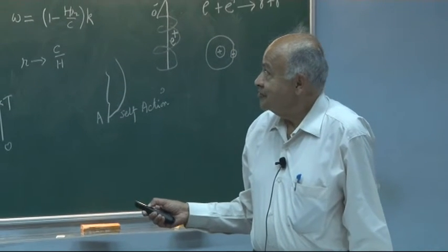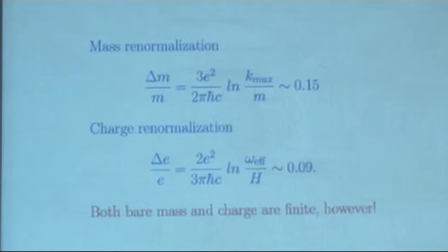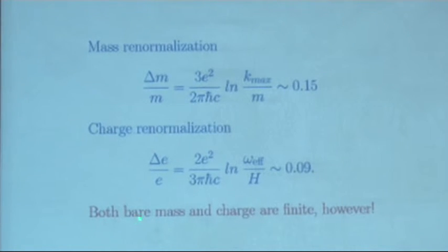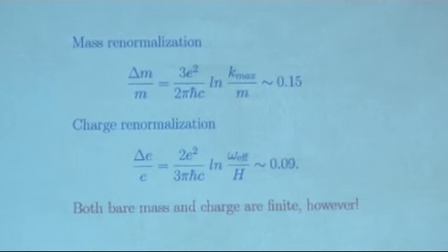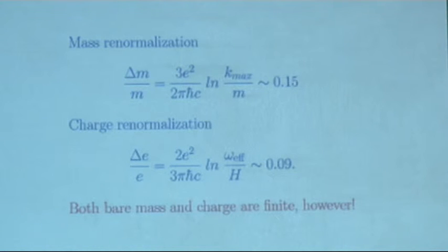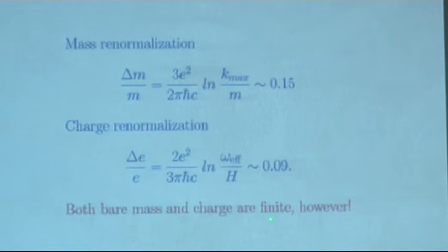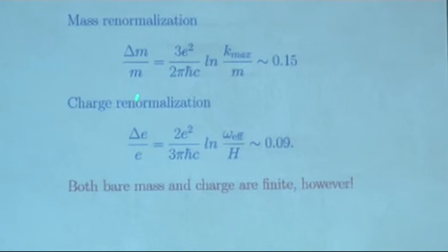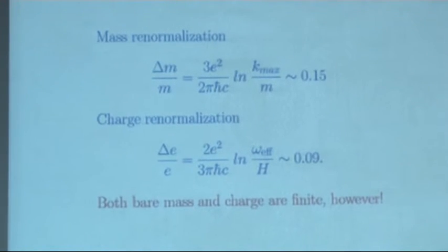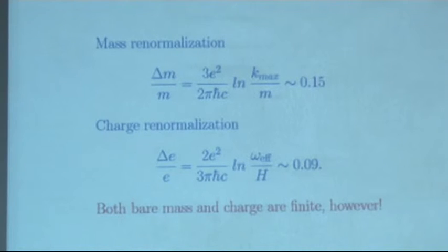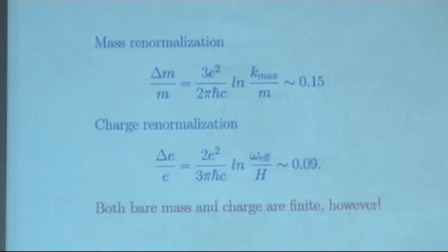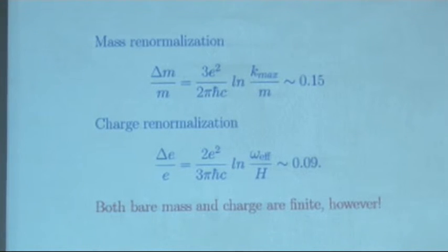Here, the point is both the bare mass and charge are finite. In the standard renormalization approach, what one does is one has a bare mass and bare charge is infinite and you subtract the correction part and then you end up with a finite value and you say that is the value that you are measuring. So here the difference is both bare mass and charge are finite and additional interacting mass and charge are also finite. So you can in principle talk of what one calls respectable mathematics not having to do with infinities.